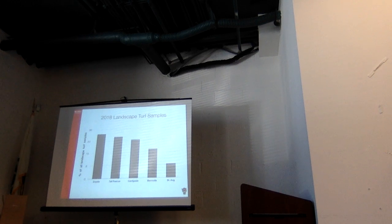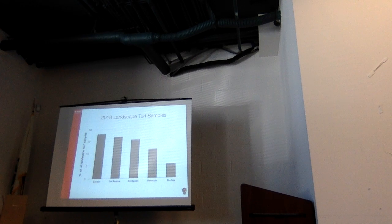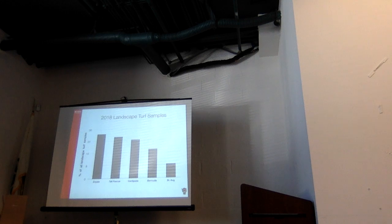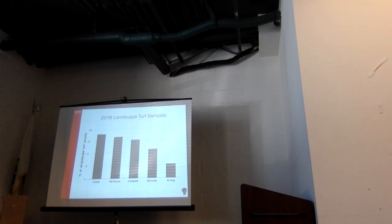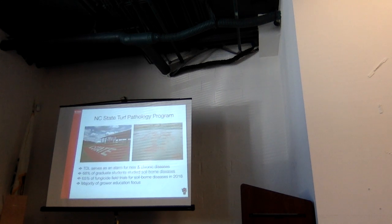If you take away the golf stuff and just look at home lawns, zoysiagrass is number one. You would think tall fescue would be number one — the mountains and Piedmont are two-thirds of the state. The diseases on tall fescue are fairly easy to diagnose on your own. But there's a lot of zoysia going in — a lot of new neighborhoods and homeowners. The cool season grasses can be tough to manage in the summer months here. Zoysia has its own set of issues in fall and spring, and that's where those samples are coming from. More and more of it's going into big markets like Charlotte, Raleigh, and Wilmington, especially in new construction. You also see a lot of bermuda going into home lawns in new neighborhoods.